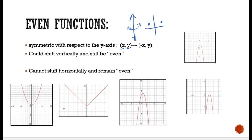The x value goes from being positive to negative, but the y value remains the same. So if I give you a point and ask what would the point be on an even function, you would know you need to change the sign of the x but leave the y alone.